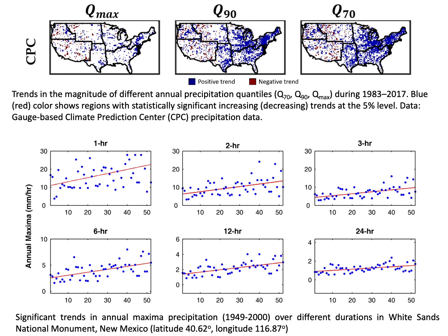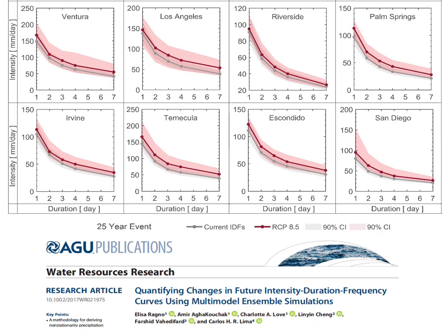You can see sample precipitation trends across different durations based on historical data. But the historical trend in observations doesn't mean that it will continue in the future. Integrating a trend in extreme value analysis is not that challenging, but we don't know how this trend will continue in the future, and we don't want to make any assumptions about future trends based on just historical observations. In a 2018 paper led by Elisa Ranio, we developed a methodology for integrating climate model projections and historical observations together to get an idea about future projections and develop non-stationary IDF curves.